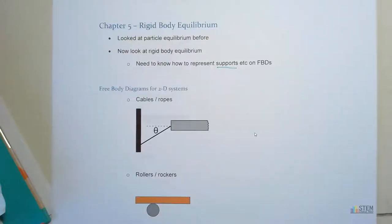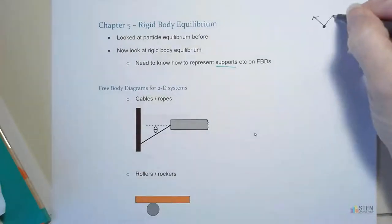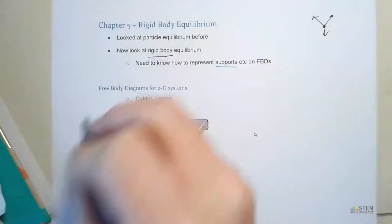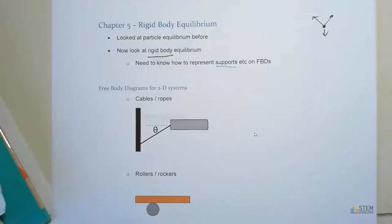We made it to chapter 5, so let's talk about what we're going to discuss. In the past, we talked about particle equilibrium — we had a little mass, drew a dot, and drew forces acting on it, typically just cables. Now we're going to look at what's called rigid bodies and do rigid body equilibrium, which involves more complicated systems with supports. We're going to start with 2D systems.